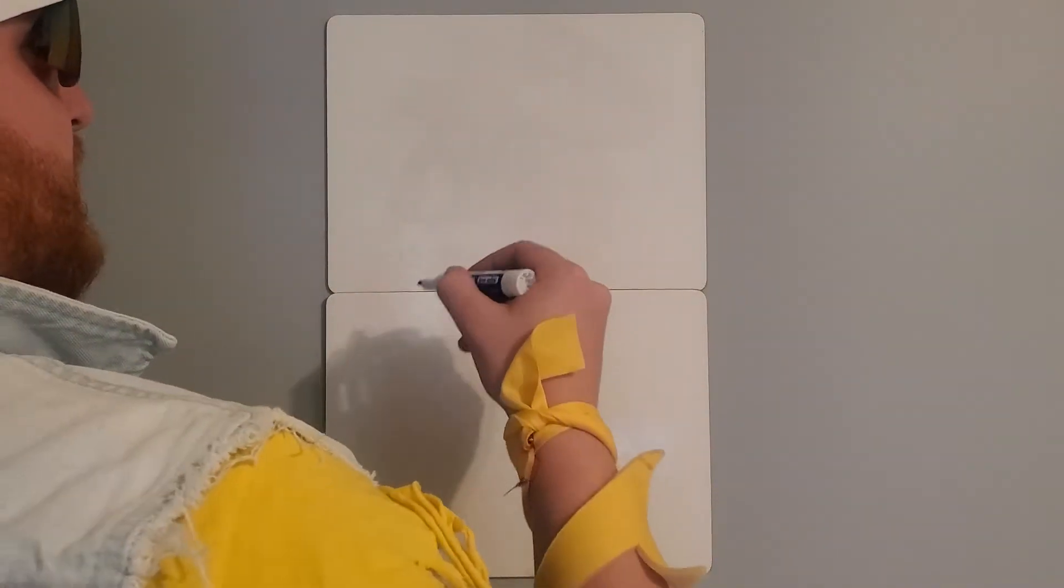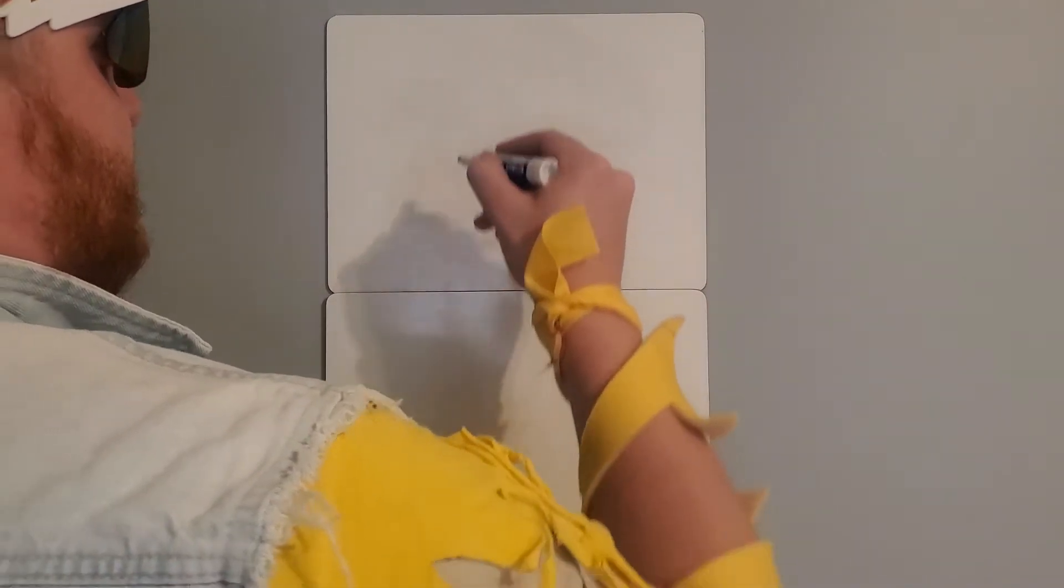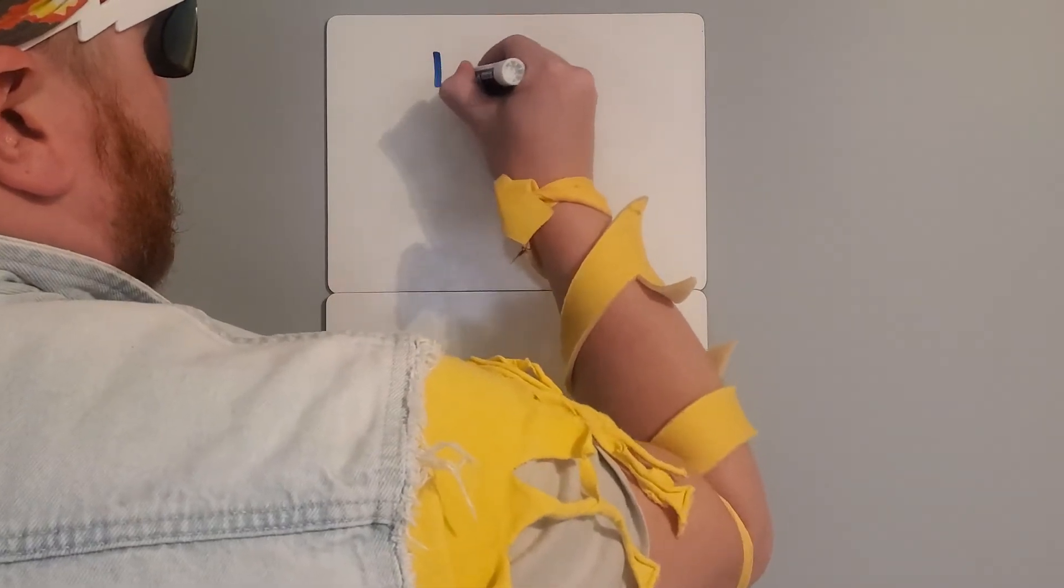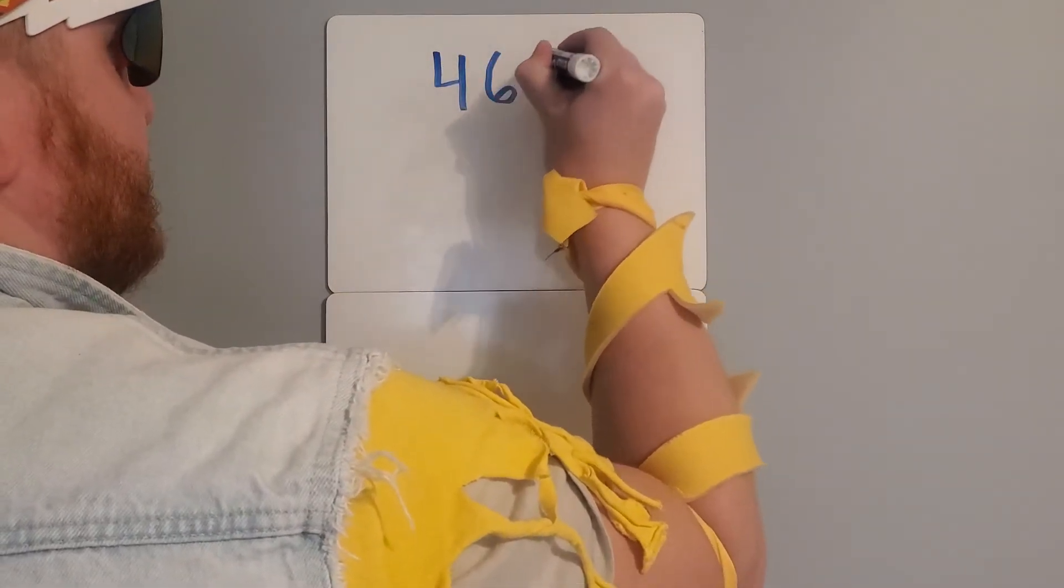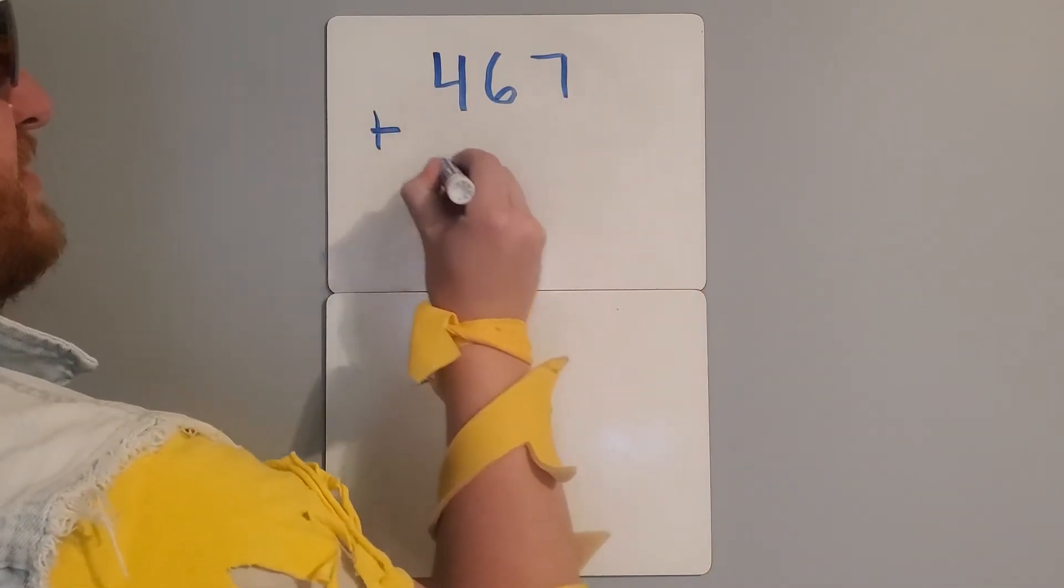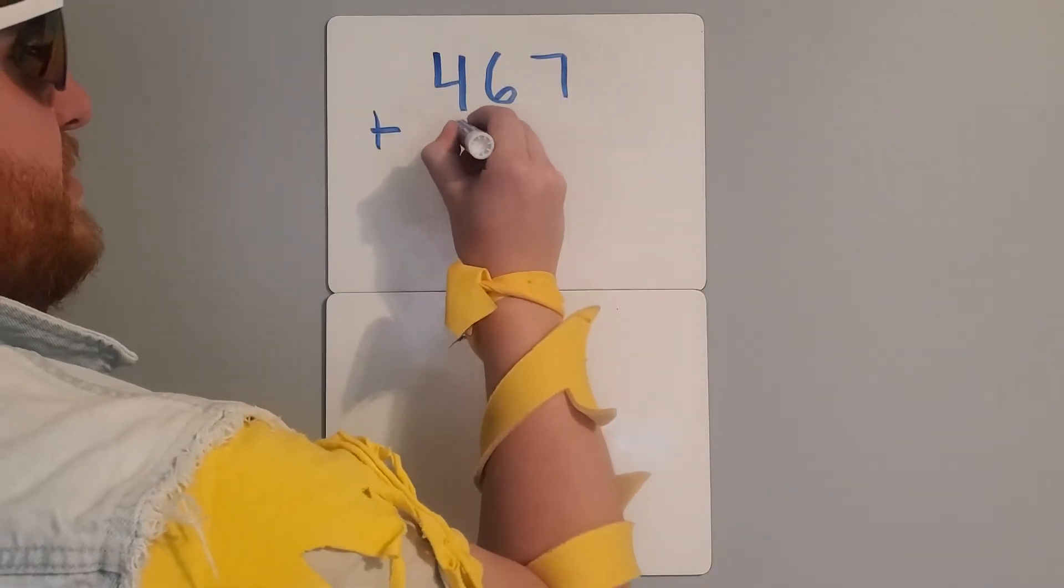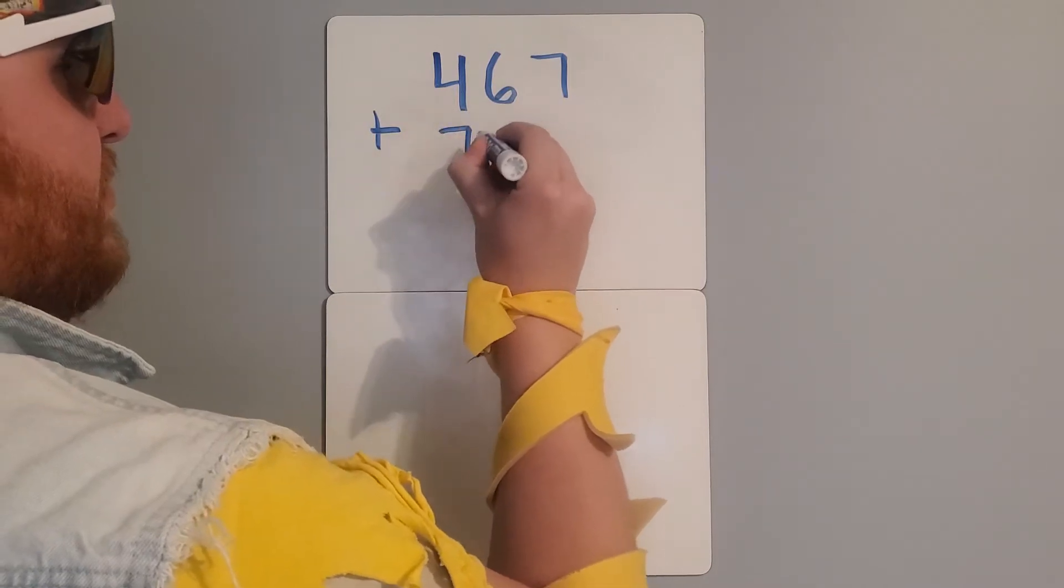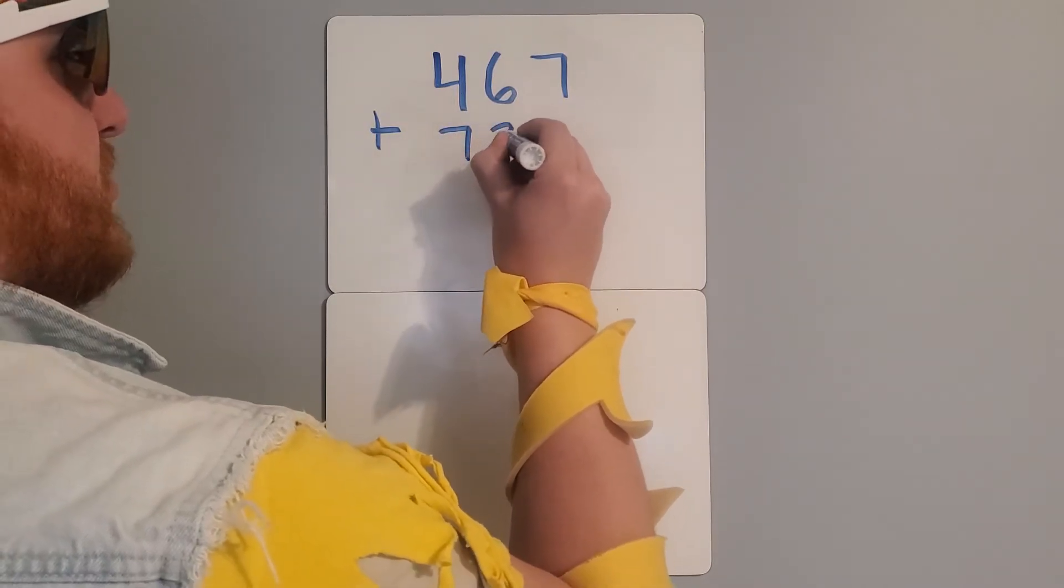Let's start with a random number. Let's do 467 plus 734.